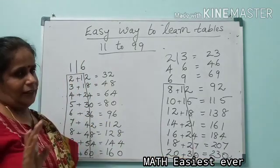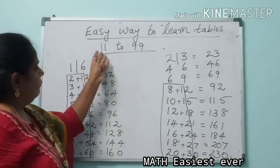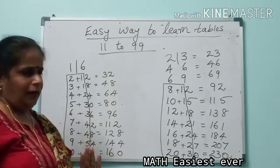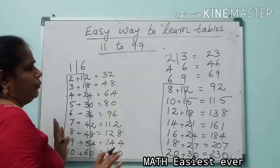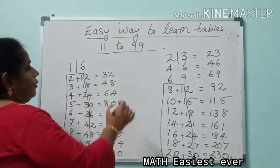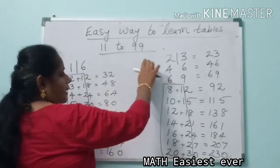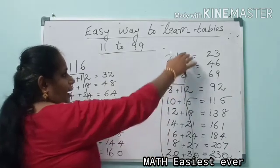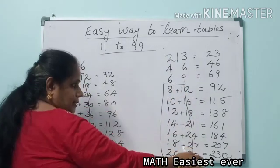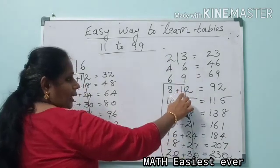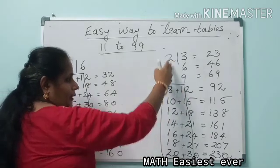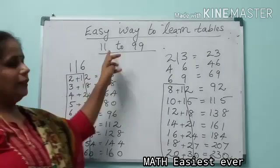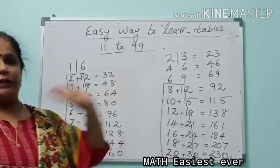One more time, I hope it's clear for you. Any number from 11 to 99 you can do in this way. You can do any number. The only thing is, you have to split the two digits and write the table continuously, and write the other table continuously. The tens digit alone you add to the number on this side, so you will get the answer. This is the easy way to learn tables of 11 to 99.